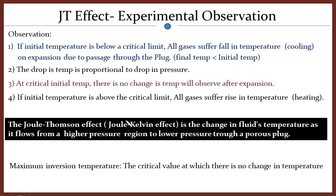Sometimes you will find a question asking specifically about Joule-Thompson cooling. In that scenario, you need to state: when a gas passes from a higher pressure region to a lower pressure region through a porous plug and its initial temperature is below the maximum inversion temperature, then the gas will suffer a cooling effect — that is called Joule-Thompson cooling. Similarly, Joule-Thompson heating is an increase in temperature of a gas flowing from higher to lower pressure through a porous plug when the initial temperature is greater than the maximum inversion temperature.